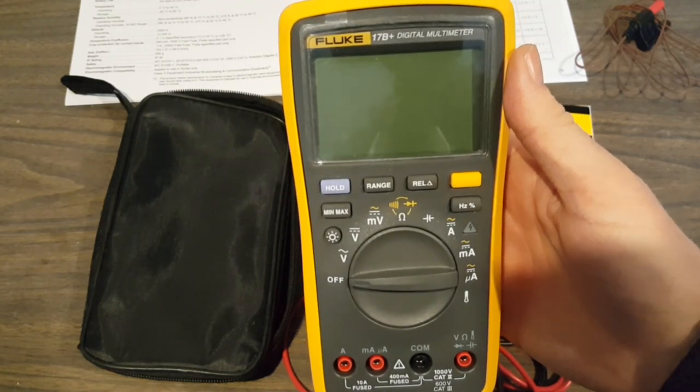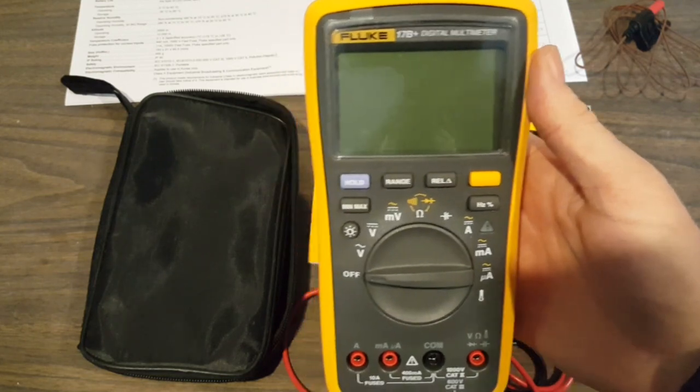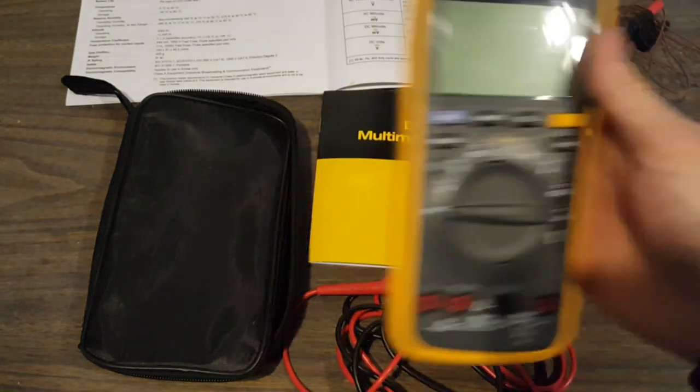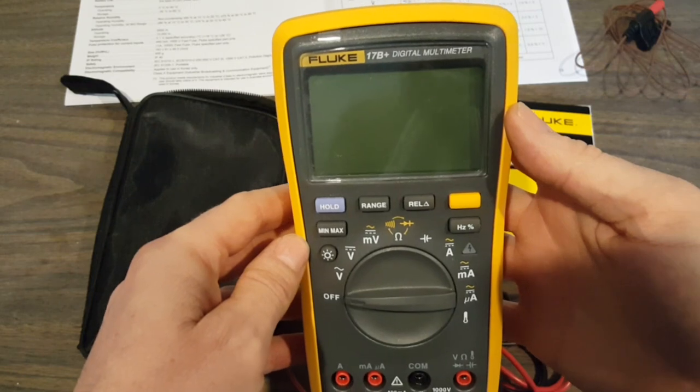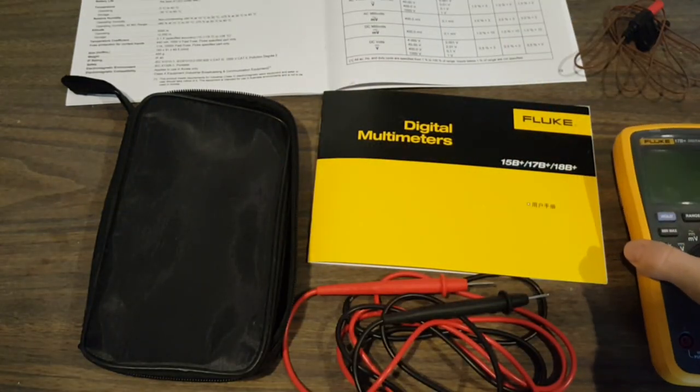Sure, you can get a free multimeter at Harbor Freight or one that's less than $10 on eBay. And in many cases those are fine, but there are other cases where they just don't cut the mustard and that's where this one comes in.